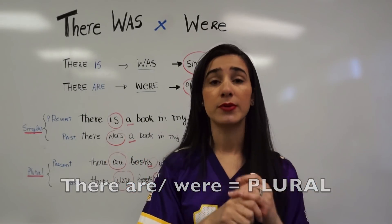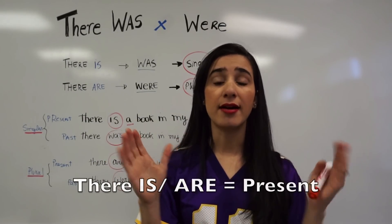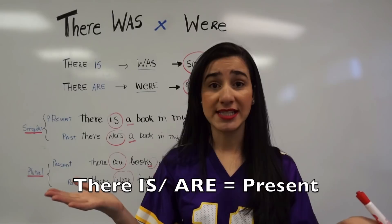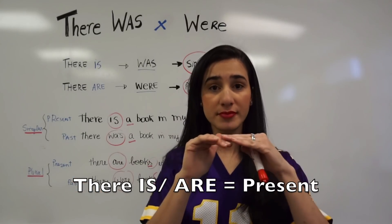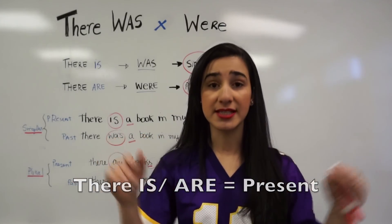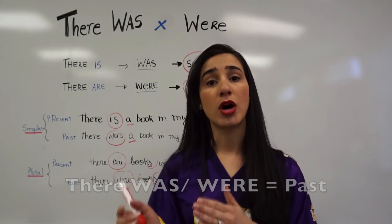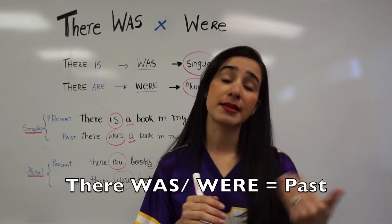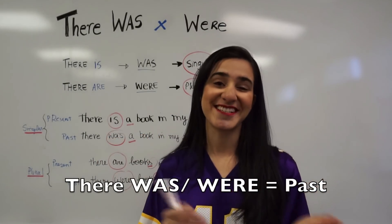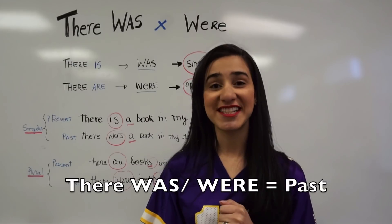So to summarize: 'there is' and 'there was' are singular, and 'there are' and 'there were' are plural. 'There is' and 'there are' are present, while 'there was' and 'there were' are in the past. That's it!